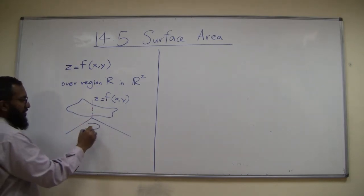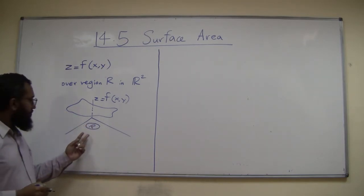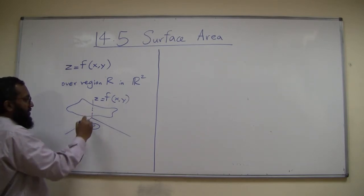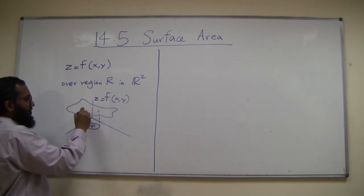Then you take some region here, R, in the input world. Over this region, the surface if you go over this thing may look something like this.